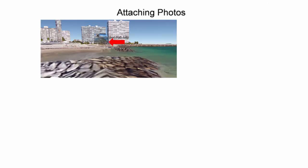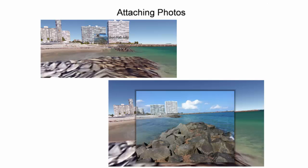Double-clicking the thumbnail allows the user to open the full image overlay. Scaling differences between the features in the image and the features in the 3D Buildings layer may be present. These differences will vary by location.